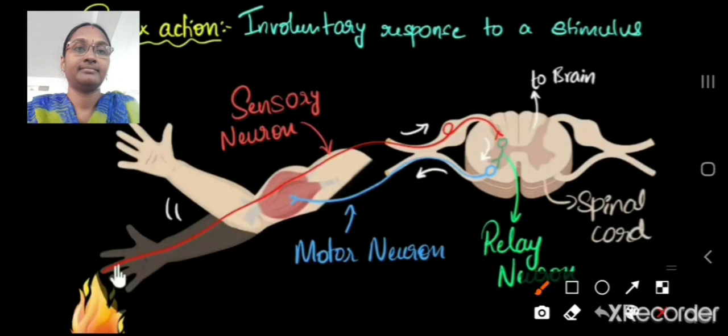The sensory neuron taking information from hand to the spinal cord. Here the interneuron, which is in green color, relays the information to the motor neuron. Here it is taking to the hand muscle, so immediately hand is moved up. So this is the reflex action and this path followed by the neurons is called the reflex arc.